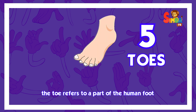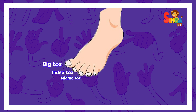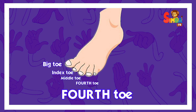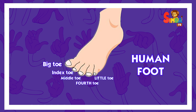Toes refer to a part of the human foot, with five toes on each foot. Just like fingers, there is a big toe, index toe, middle toe, fourth toe, and a little toe. That's the human foot! That was all about fingers and toes. Thanks for watching.